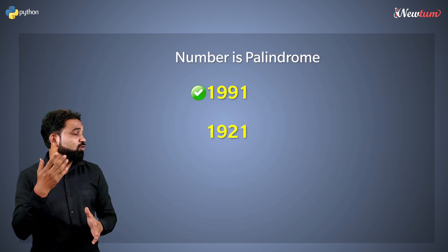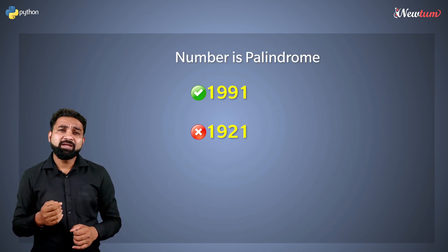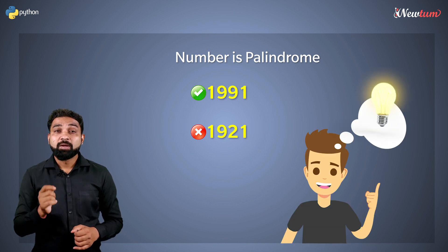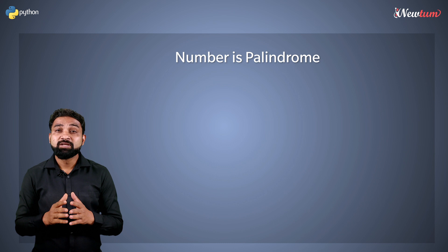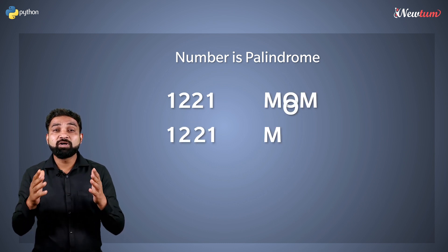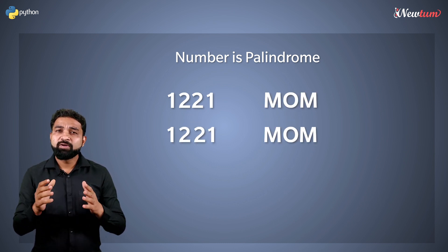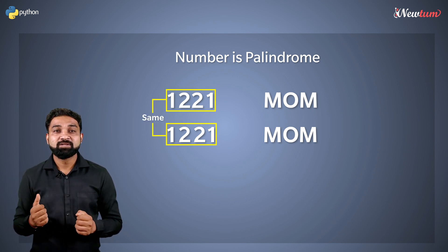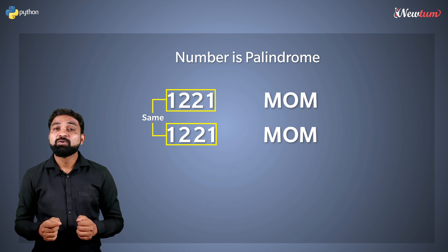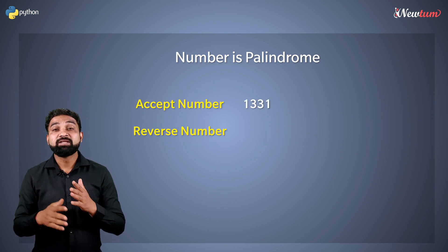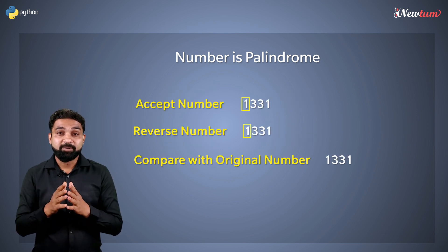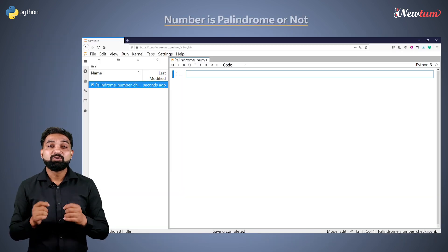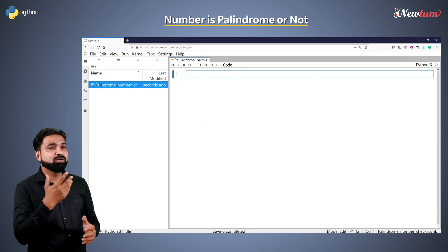Like every other program, we need to understand the logic. Palindrome numbers means if you reverse the number or word, it remains the same. For example, 1221 — if you reverse the number, it remains the same. To create this program, we first need to accept the number, then reverse it, and then compare it with the original number. Let's write the code to check whether a number is palindrome or not.